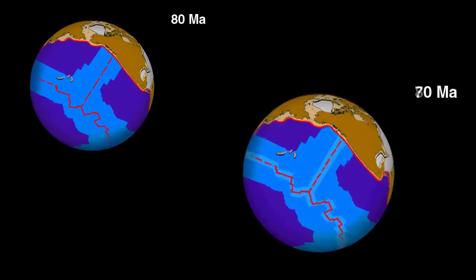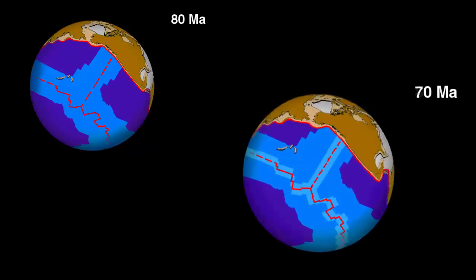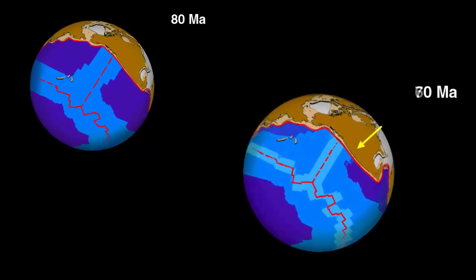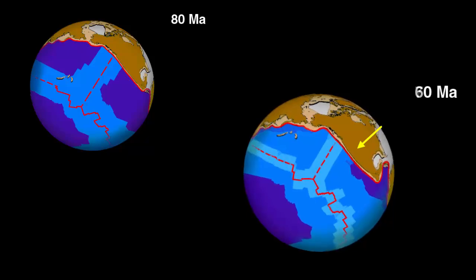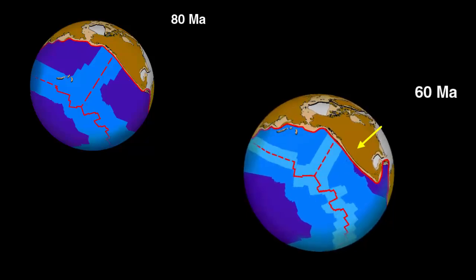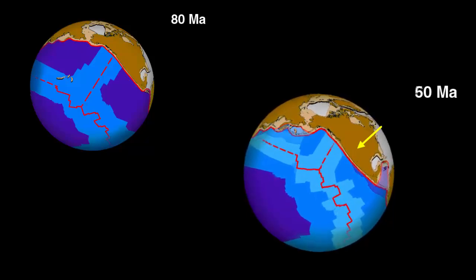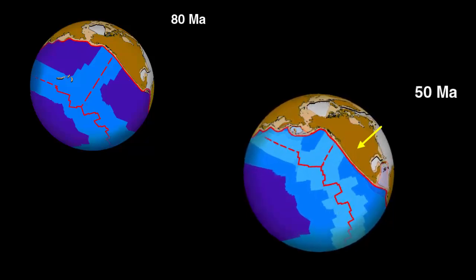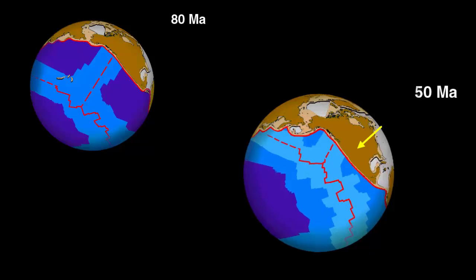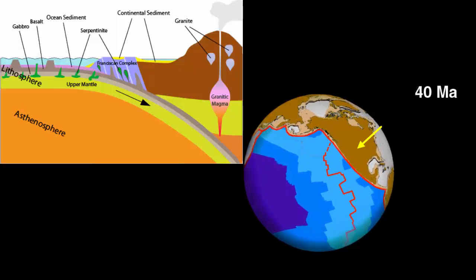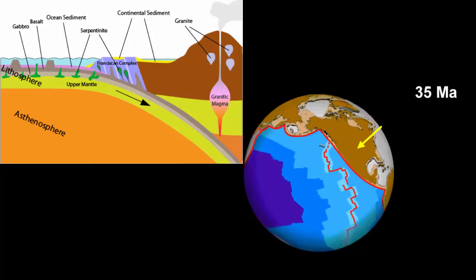Notice what has happened over the past 80 million years. As the Atlantic Ocean spread, North America was pushed westward. The western continental margin of North America was a large, long subduction zone, with associated volcanoes and terrain accretion.